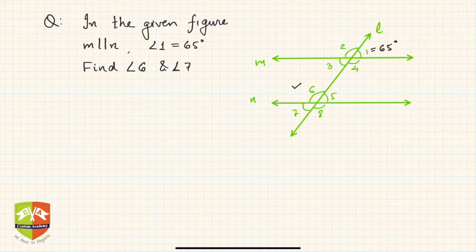You have to find angle 6 and angle 7. Let's start. So if you see angle 1, you'll find out angle 6 and 7. Hence, angle 7 is equal to angle 5. You know why? Vertically opposite angles.